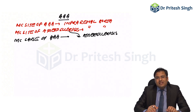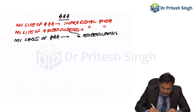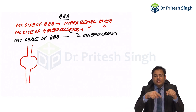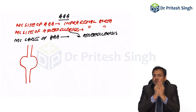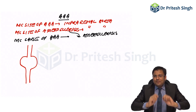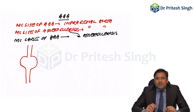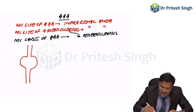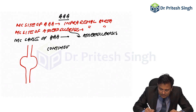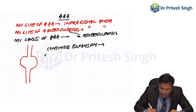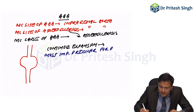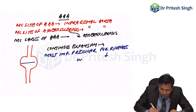In abdominal aortic aneurysm, atherosclerosis causes a degenerative condition in the infrarenal aorta, leading to progressive increase in diameter. The natural course of aneurysm is continuous expansion. The most important predictor of rupture is width or diameter of the aneurysm.